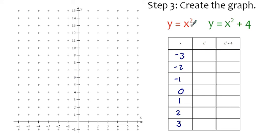So in red, I'm using the formula y = x². 0², 1², 2², 3², (-1)², (-2)², (-3)², and here are the ordered pairs that go along with that graph.